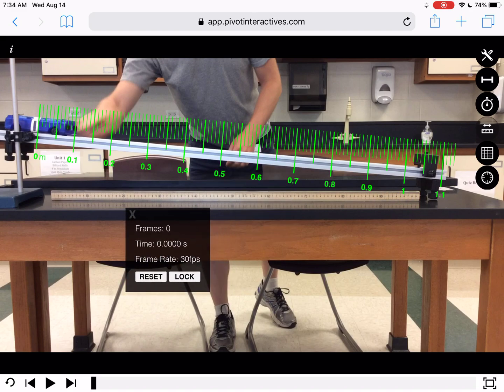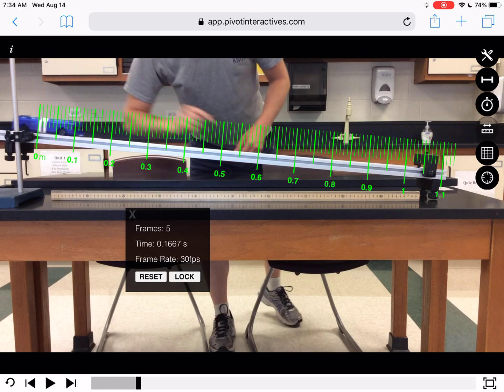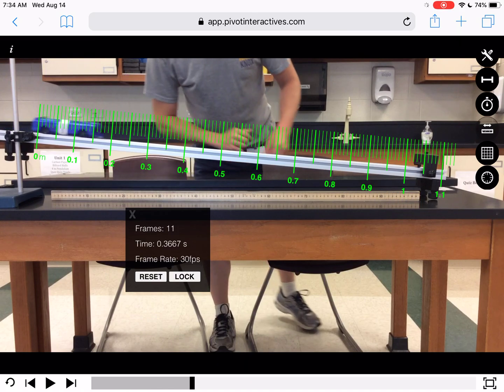And you'll notice that the time is zero seconds. If my video didn't start, let's say the car didn't start moving until here where it says 0.3667 seconds, I would just hit reset and that's starting my stopwatch from wherever I wanted to start.